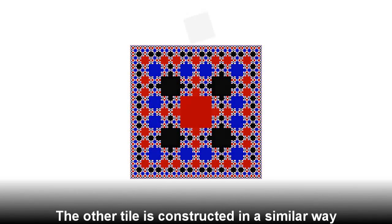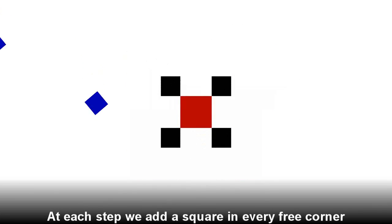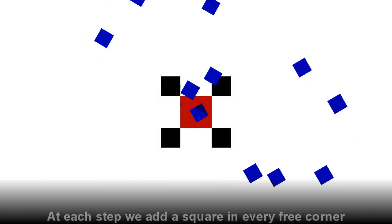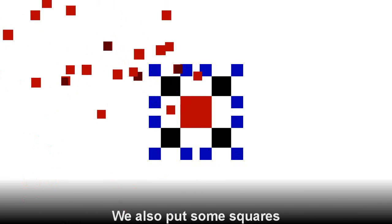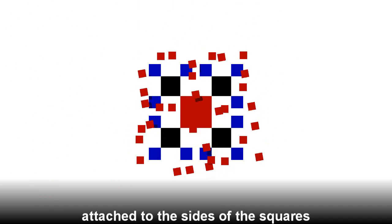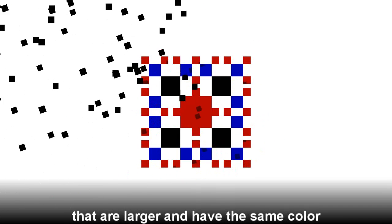The other tile is constructed in a similar way. At each step, we add a square in every free corner. We also put some squares attached to the sides of the squares that are larger and have the same color.